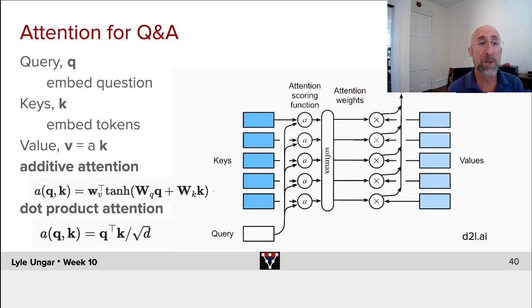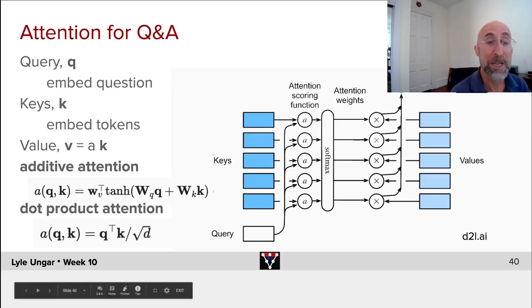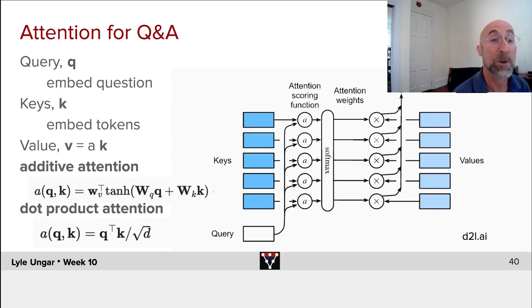So how does that work? The formal piece is going to involve queries, keys, and values, always a little bit confusing but not too bad. So the query, think of the embedding of the question. The key, think of embedding all the words in the Wikipedia article, each embedded quite locally.